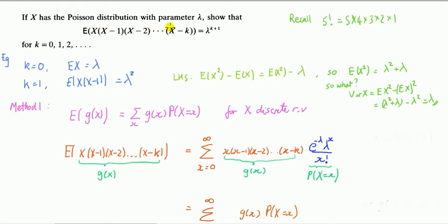Recall that the expected value of x is the first moment, and expected value of x squared is the second moment, and so on. So this is called a factorial moment. In the case where x is a Poisson distribution with parameter lambda, it has this very neat expression: it's just lambda raised to one power higher than whatever this value k is, for integer values k = 0, 1, 2, and so on.